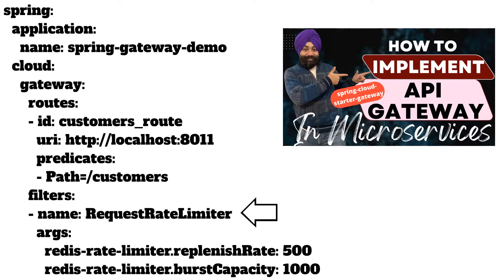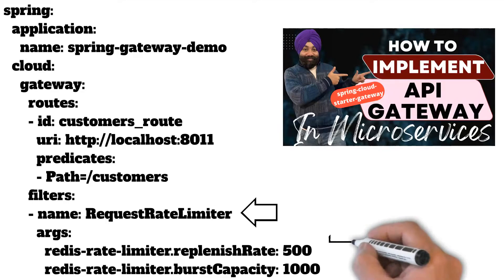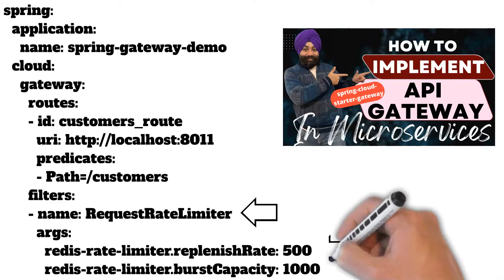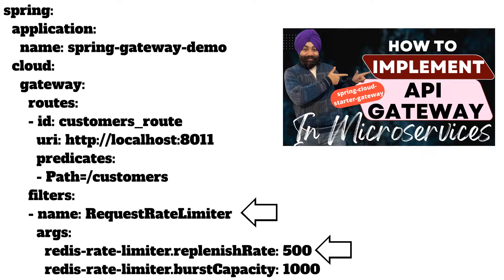We can configure the rate at which a client can call a particular service by setting the redis-rate-limiter.replenishRate property. For example, if it is set to 500, the client can make 500 requests per second.